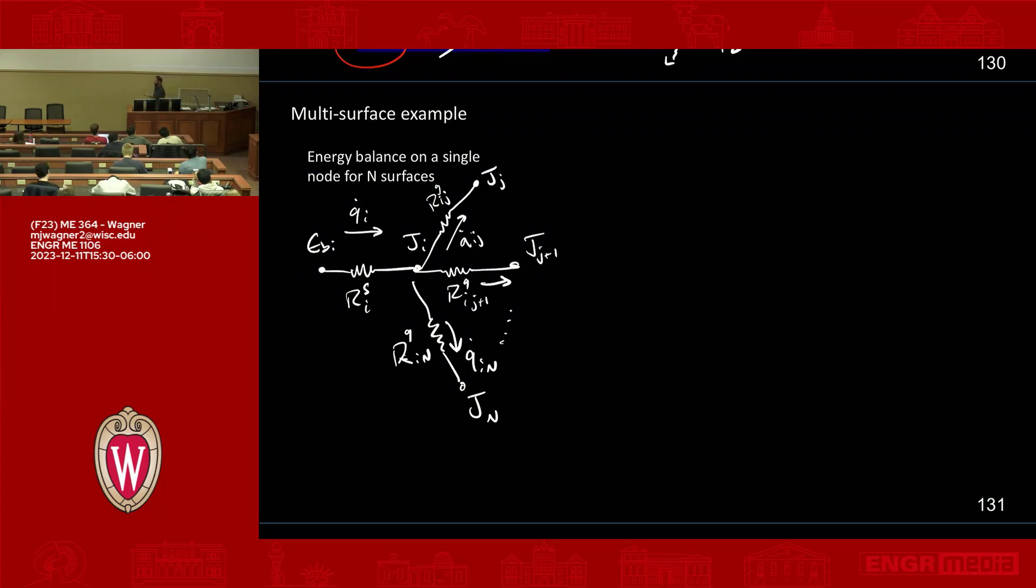So again, what I did here is I'm looking at a single node, call that node I, and then you're doing an analysis on that one node, and from that you can develop a set of equations. You would then repeat this for every node I.